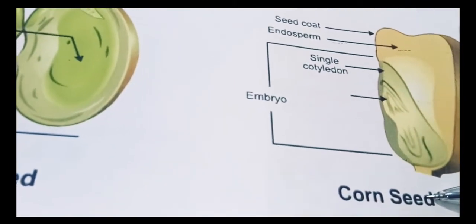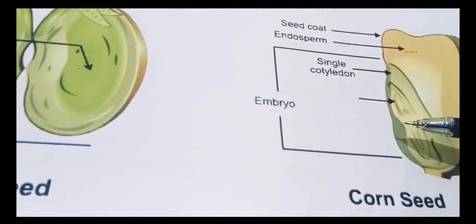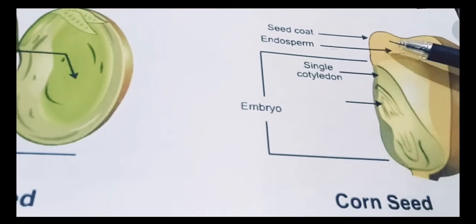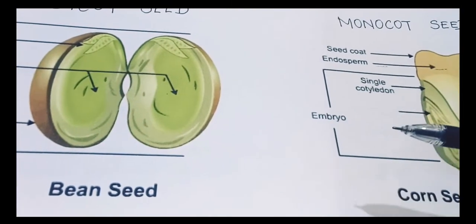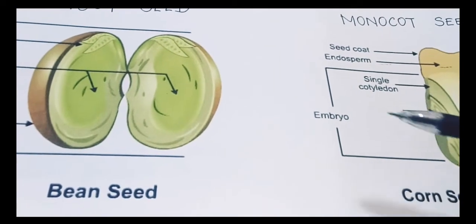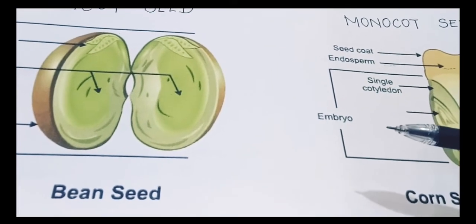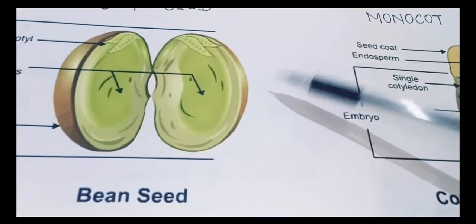And the monocot seed: corn seed, wheat, maize, rice, all the cereals, many cereals they are monocot seed. So now you have to find it out in your kitchen also. You have to see there are many seeds which we are using for eating. Are they monocot or dicot?